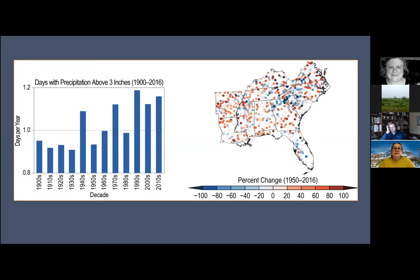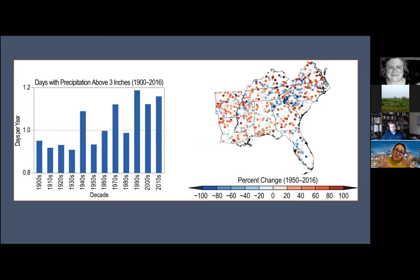Looking at days with precipitation above three inches, you can drill down in the southeast and see the red dots showing some specificity — there's not a big increase in certain parts of certain states and more so in other parts. This information lets you drill down to where reservation lands or homeland territories are, so you can see what the trends have been looking like up until 2016.